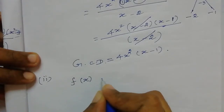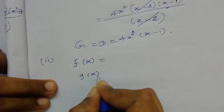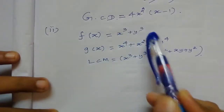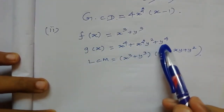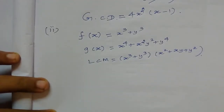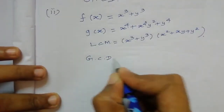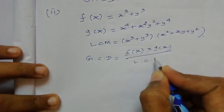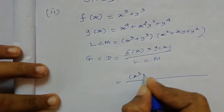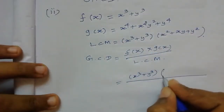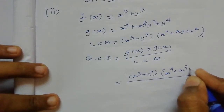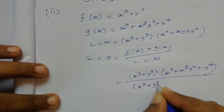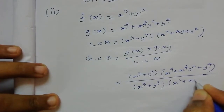Now we go to the second subdivision. Write the given polynomials f(x) and g(x). f(x) = x³ + y³, g(x) = x⁴ + x²y² + y⁴, and LCM = (x³ + y³)(x² + xy + y²). First write the formula: GCD = f(x) × g(x) ÷ LCM, and substitute the given values.